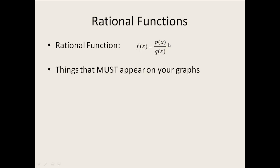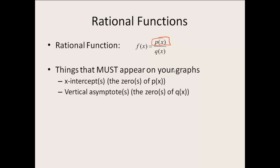When we graph these, there are several things that must appear on your graphs. First, we need the x-intercepts, and to find our x-intercepts we set p of x equal to zero — p of x is whatever we have on top. To find our vertical asymptotes, remember asymptotes are the lines that our graph would approach. So we find the zeros of q of x, our denominator, because we can't divide by zero.